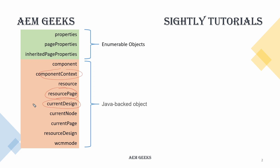'currentPage' is the page on which you drag and drop the component, providing that page's information. 'currentDesign' refers to the design node available to store template-level properties — if you worked with static templates, this is where properties like allowed components for a parsys are stored. Previously it was under /etc/designs but the location has changed per the repository restructure. 'currentNode' is the node created when you drag and drop the component on the page.